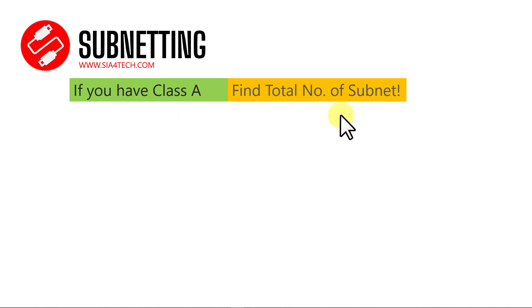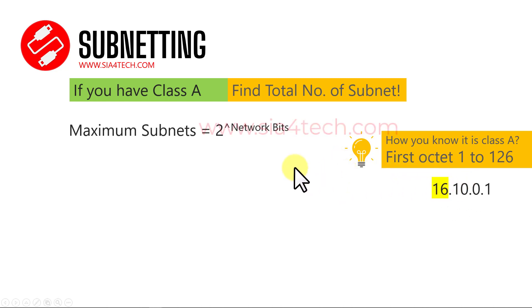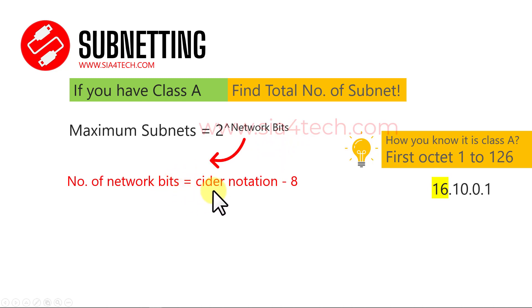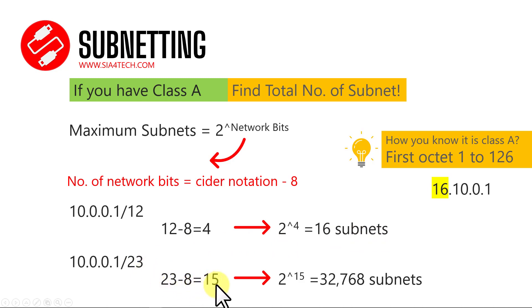To identify Class A, look at the first octet — if it is between 1 and 126, it is Class A. For example, 16 falls in this range, so it is Class A. The formula is: maximum subnets = 2 to the power of (CIDR minus 8). Example: 10.0.0.1 /12 — 12 minus 8 equals 4, so 2 to the power of 4 equals 16 subnets. Another example with CIDR /23: 23 minus 8 equals 15, so 2 to the power of 15 equals 32,768 subnets.